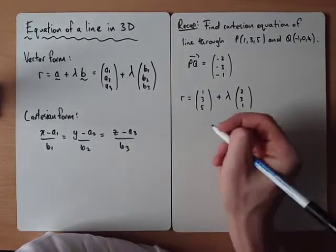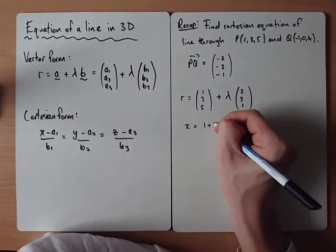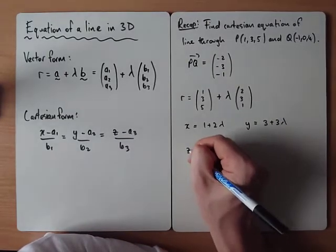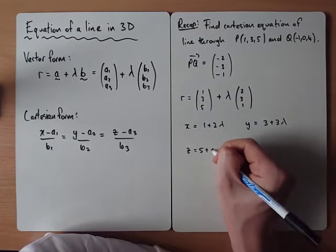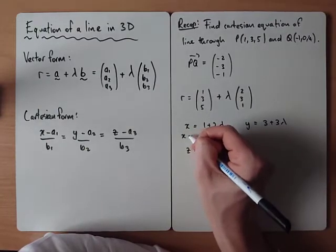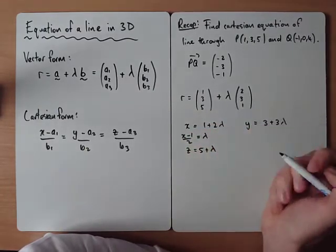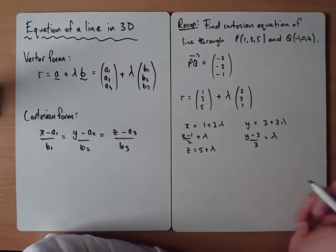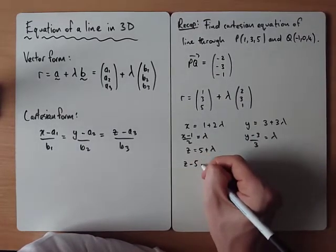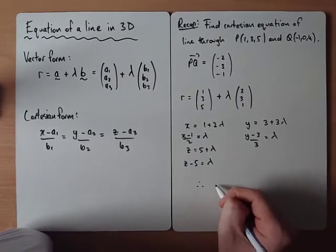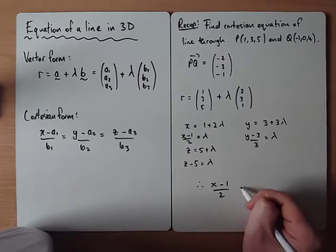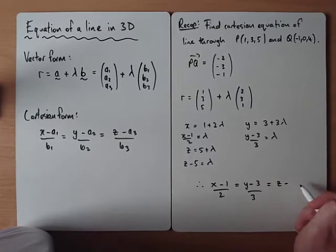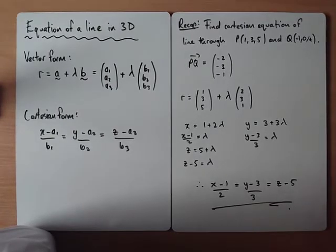Now we want the Cartesian version. So the x-coordinate would equal 1 plus 2 lambda. The y-coordinate would be 3 plus 3 lambda. And the z-coordinate would be 5 plus lambda. So rearranging each of these, we could see that x-1 over 2 would be equivalent to lambda. y-3 over 3 would be equivalent to lambda. And z-5 would be equivalent to lambda. So therefore, the Cartesian form would be x-1 over 2 equals y minus 3 over 3, which would equal z minus 5.